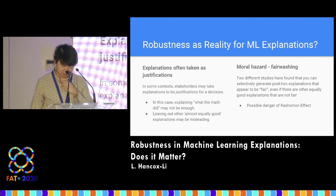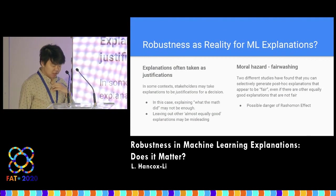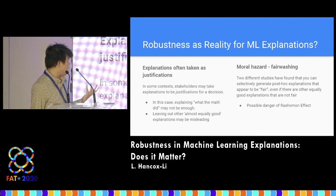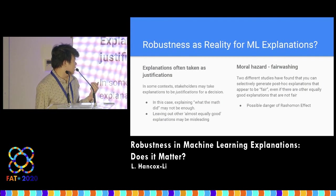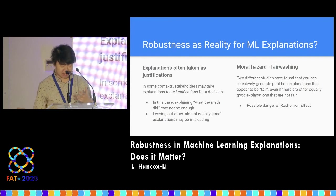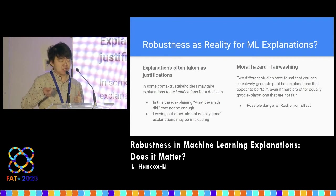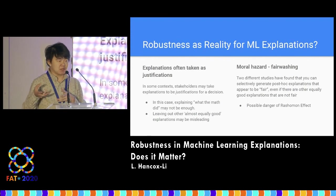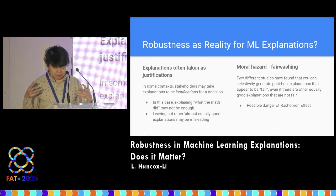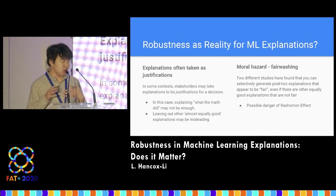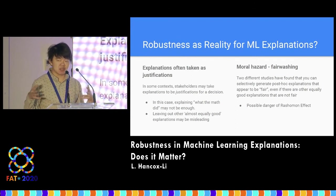Finally, another reason for wanting robust explanations is to avoid a kind of moral hazard called fair washing: you can generate a large number of post hoc explanations and cherry-pick the ones that don't use prohibited attributes to present to the user. This is misleading because you're hiding from the user the fact that there are many other equally good explanations that do use prohibited attributes.